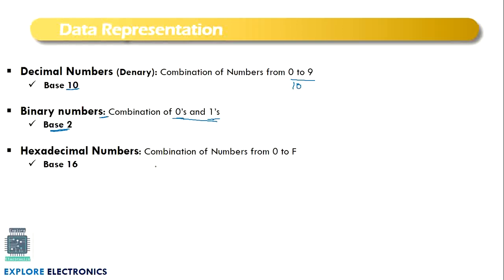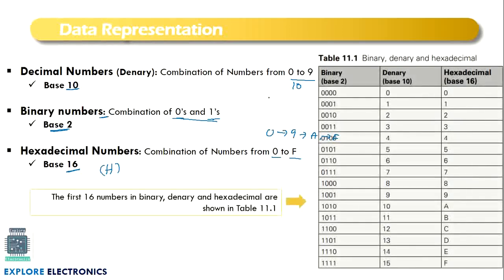We also have hexadecimal numbers. In hexadecimal, we have zero to F — zero to nine, and after nine we represent with A, B, C, D, up to F — totaling 16 values, so the base is 16. The base notation tells us which kind of data representation is being used. Looking at equivalent numbers: zero through nine are the same in decimal and hexadecimal; for example, 8 in decimal is written with base 10, and 8 in hexadecimal is written with base H.